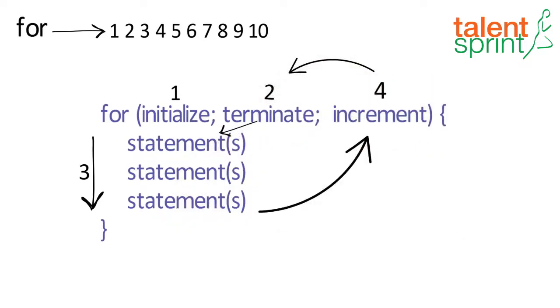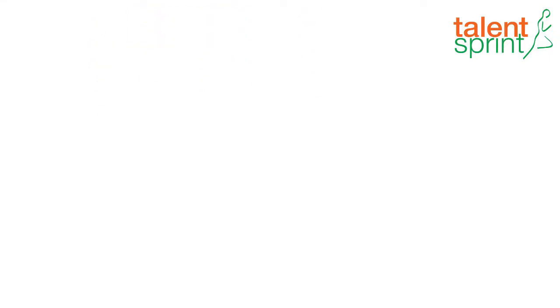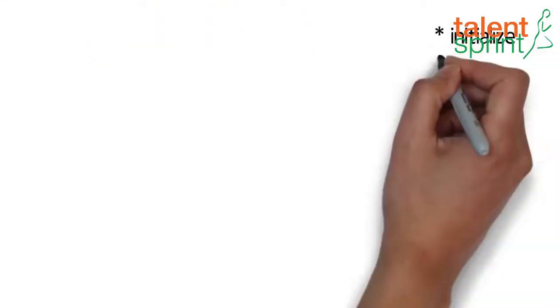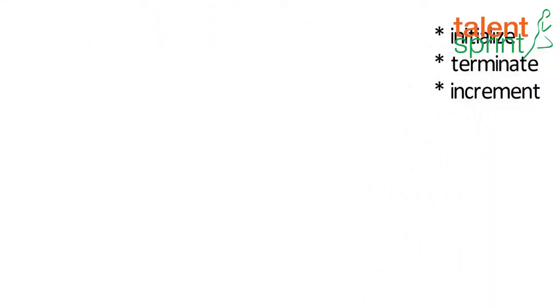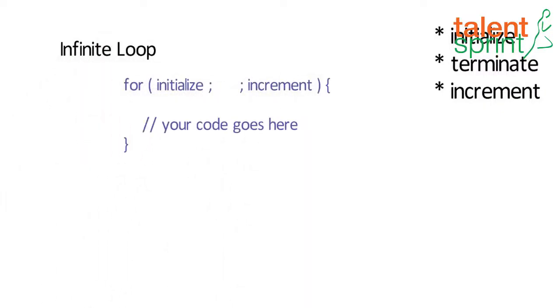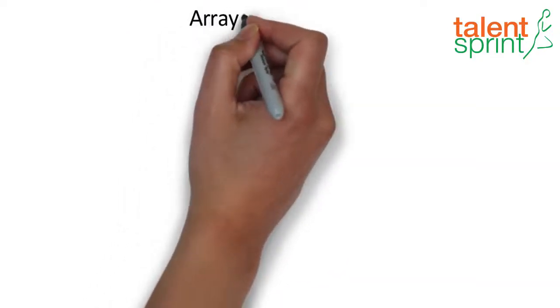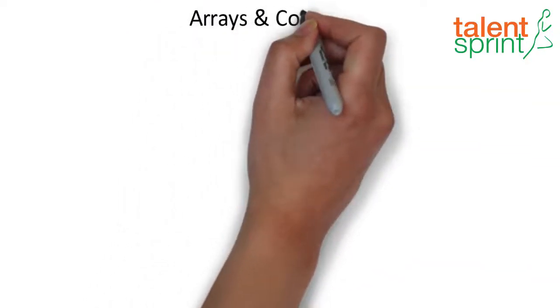We then check for the condition again, execute the steps, and repeat the process till the termination condition is met. The three expressions of the for loop are optional, and an infinite loop can be created if you don't provide a termination condition.